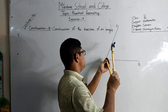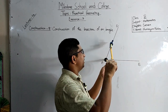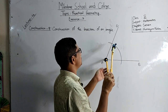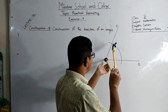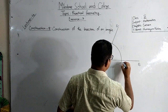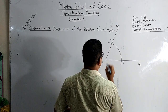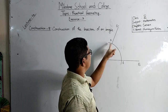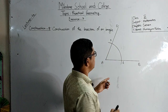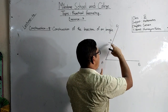With A as a center, taking a suitable radius, we will draw an arc. Suppose this arc intersects AB at point E and AC at point F.